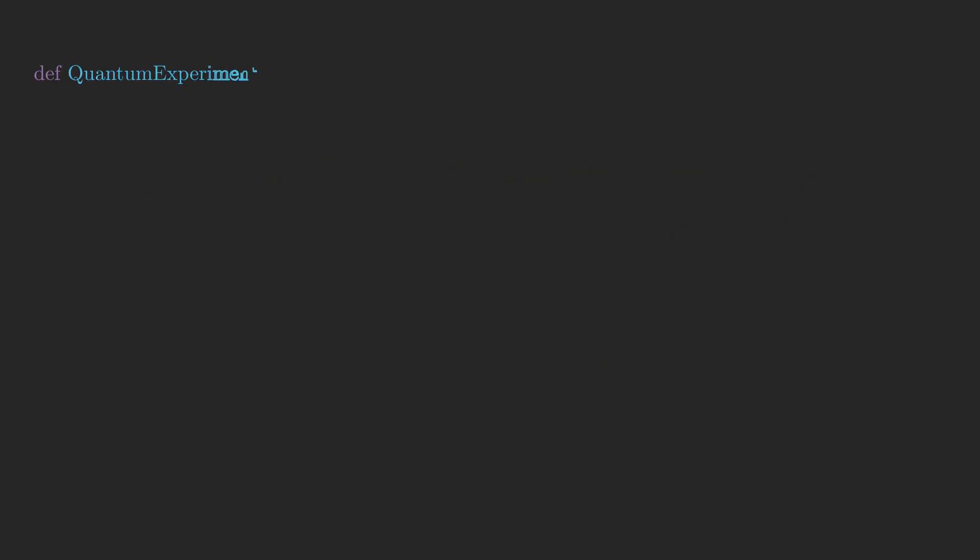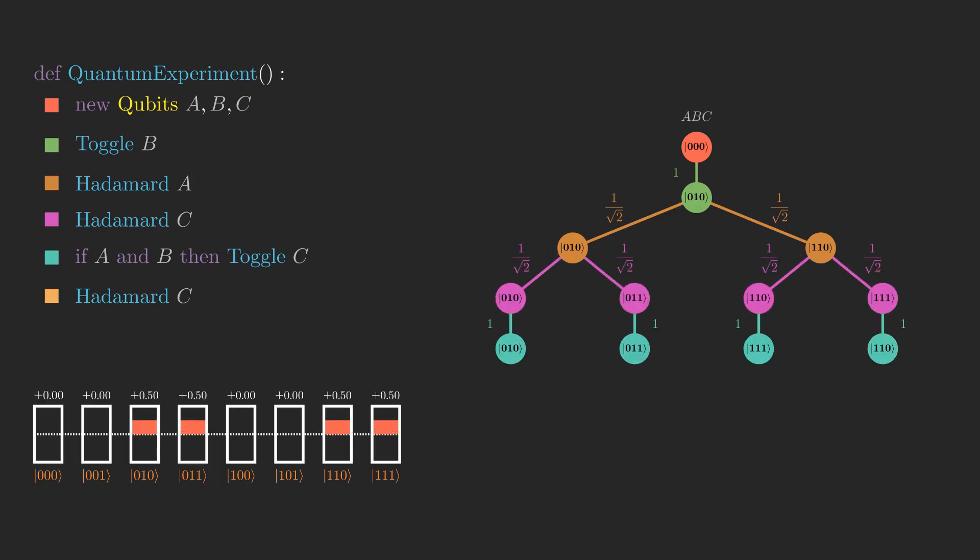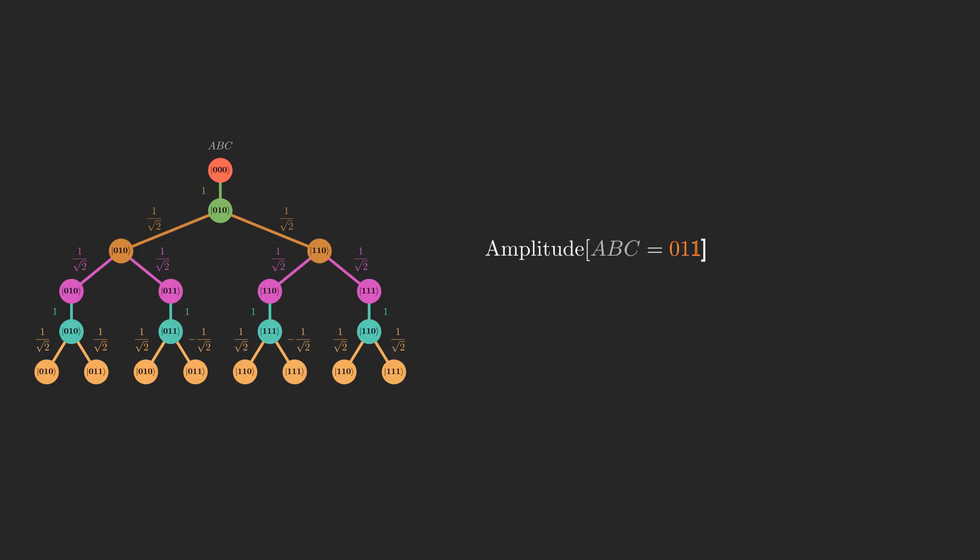Let's try using a few quantum instructions together. Notice how even though the state 011 appears in the amplitude tree, the final amplitude on this state is 0. This is because the two branches where 011 appears have amplitudes which cancel each other out. This cancellation property is what is at the heart of quantum computation. If there's one thing to remember about this video, it's that the ideal goal of a quantum algorithm is to cancel out all of the amplitudes on undesired output states, and to leave all of the amplitude on the desired output state.